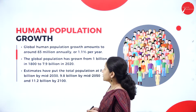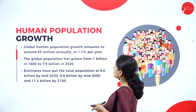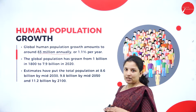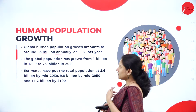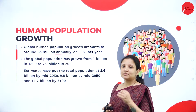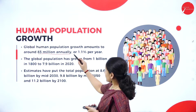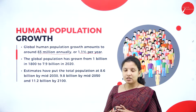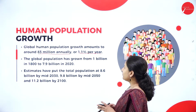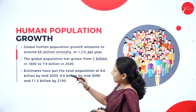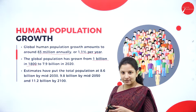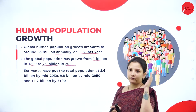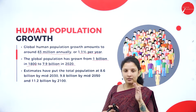Talking about human population growth, the global human population grows by about 83 million every year when census is taken and the population is assessed. The world population increases by 83 million, or 1.1 percent, every year. The global population has grown from 1 billion in 1800, and in 2020 it is 7.9 billion — from 1 billion to 7.9 billion.